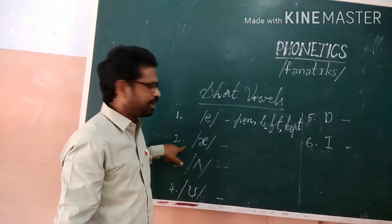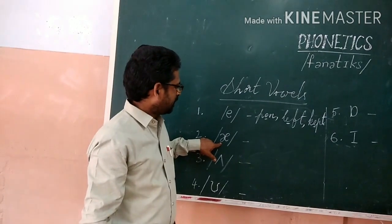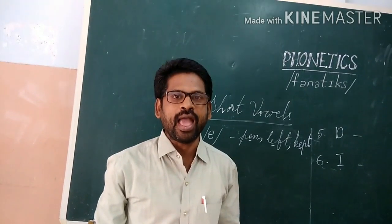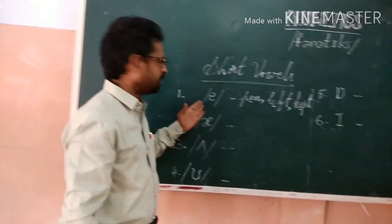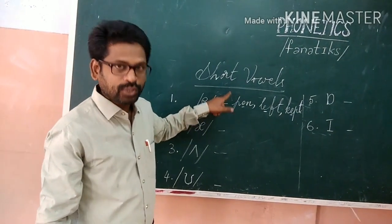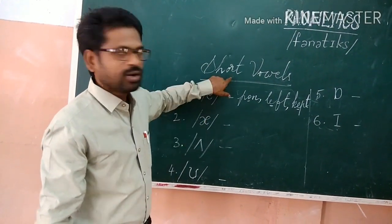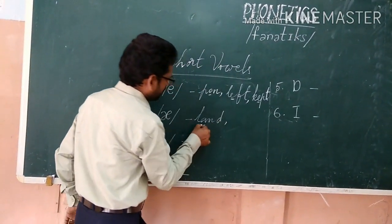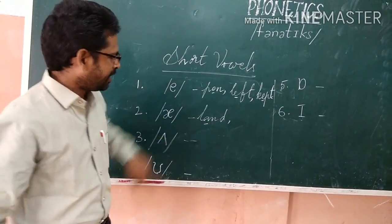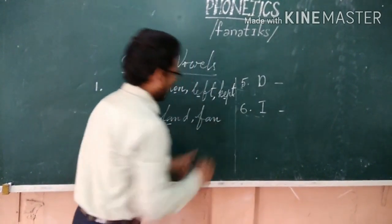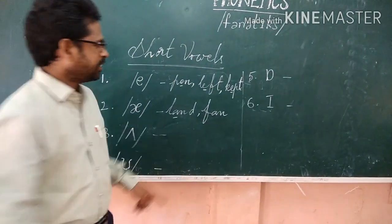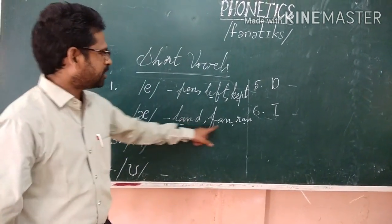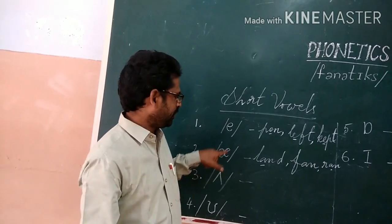The next symbol looks like an X, and the pronunciation of this symbol is a bit longer than the previous one. Remember, we are learning short vowels — the bit is longer but it still comes in short vowels. Examples: L-A-N-D — land; F-A-N — fan; R-A-N — ran. Whenever you get this A sound, we use this symbol.